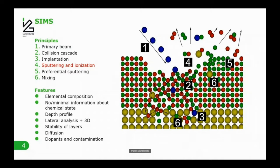Another very important phenomenon that makes interpretation difficult is the mixing effect. When we set atoms in motion, they move around the sample — generally being pushed deeper, but also extracting some atoms from deeper layers towards the surface. So the mixing effect is asymmetrical: we push more atoms deeper, but it can occur in both directions.